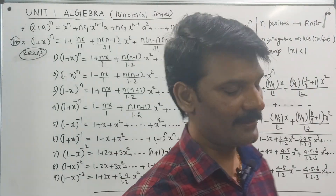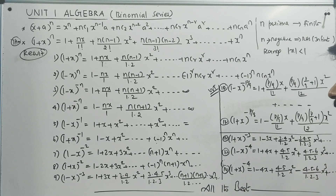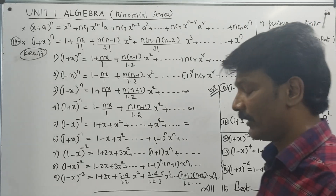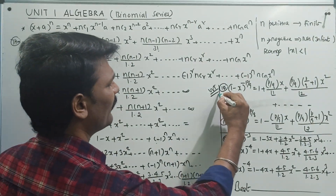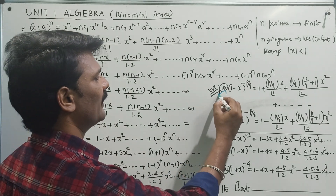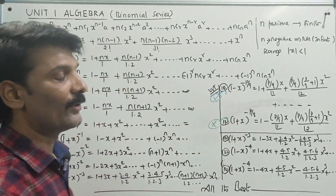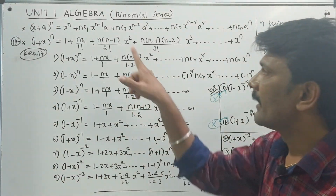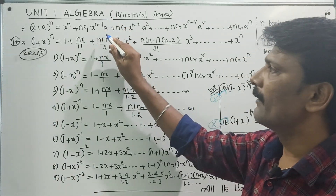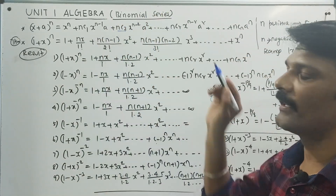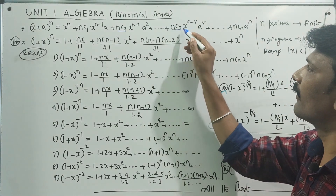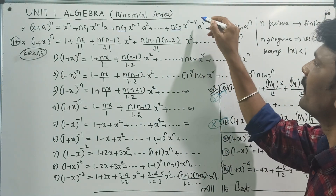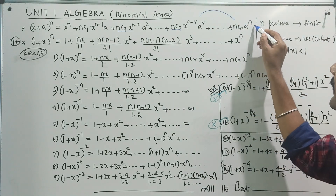Now we are going to take the binomial series. This is a very common one. We will talk about coefficients. Let's look at: x plus a whole power n equals x power n plus nc1 into x power n minus 1 into a, plus nc2 into x power n minus 2 into a squared, plus etc., plus ncr into x power n minus r into a power r.